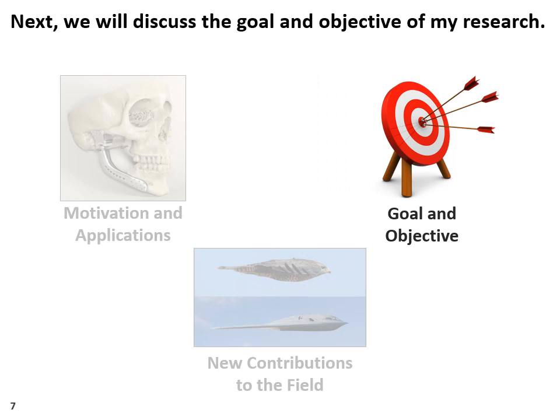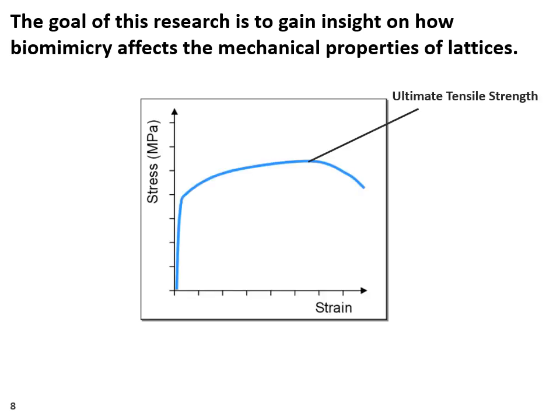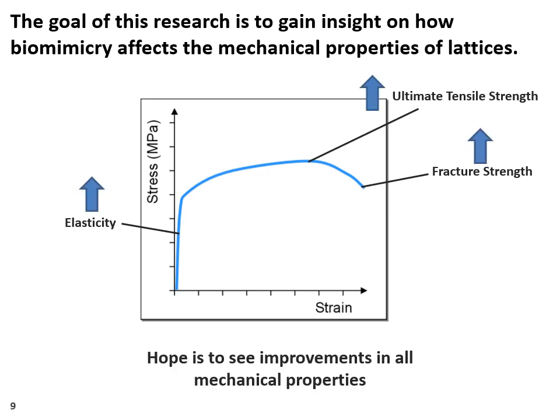Next, we can move on to what exactly my research hopes to achieve. The overarching goal of my research is to see how utilizing biomimicry and natural influence in lattice design can impact mechanical properties. Some properties of interest include ultimate tensile strength, fracture strength, and elasticity, to name a few. From biology, we know that nature has produced materials with incredible mechanical properties, such as spider silk and plant cells. By using similar designs from those natural materials in man-made materials, it may be possible to increase the overall mechanical performance of engineered parts. This potentiality is what my research aims to investigate.